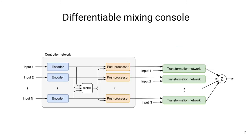Here's a more detailed look at our proposed approach, in which we have the controller network on the left and the transformation networks on the right, which are emulating the individual channels of the mixing console. Note that we apply weight sharing across all the input channels, so every encoder here is the exact same network, just copied n number of times. Same for the post processor and the transformation network. This weight sharing essentially enables us to handle an unknown number of tracks at inference time and during training.